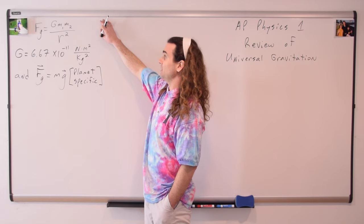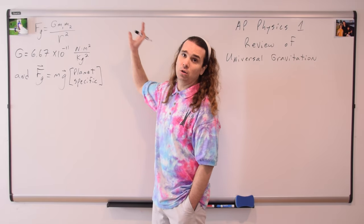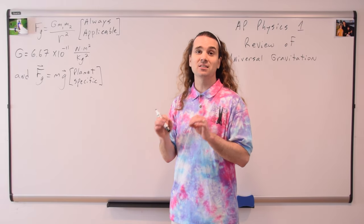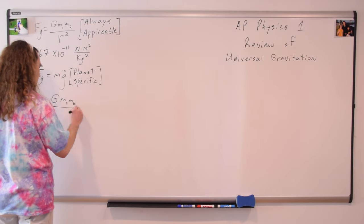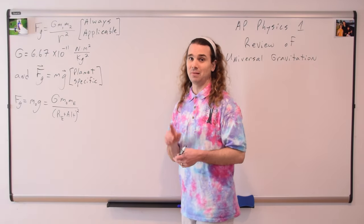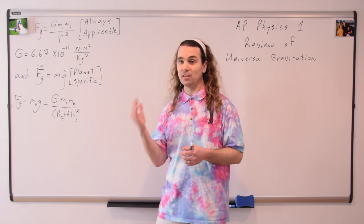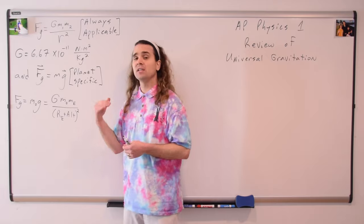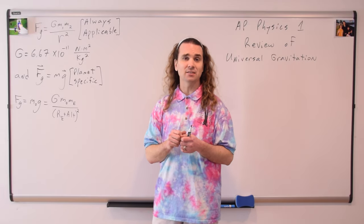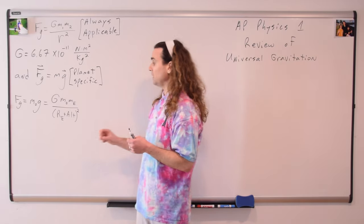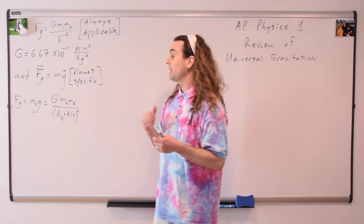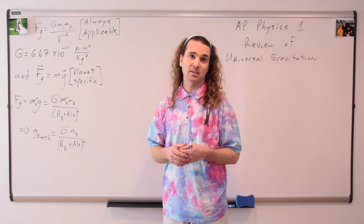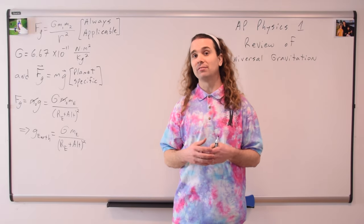Newton's universal law of gravitation, unlike the planet-specific equation for the force of gravity, is always applicable. Notice we can set the magnitudes of these two equations equal to one another to solve for the acceleration due to gravity on any celestial object. More specifically, we can figure out the acceleration due to gravity here on planet Earth. The force of gravity between an object and the Earth equals the mass of the object times little g, which equals big G times the mass of the object times the mass of the Earth divided by r squared. Remember, r is not the radius, but rather the distance between the center of the Earth and the center of the object, which equals the radius of the Earth plus the altitude of that object. We can cancel out the mass of the object from both sides, giving us an equation for the acceleration due to gravity on planet Earth.